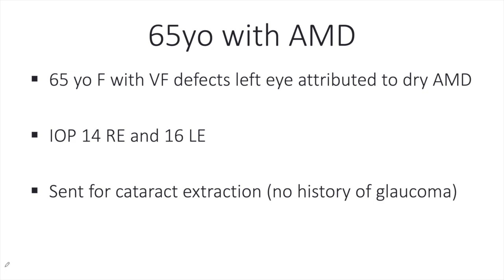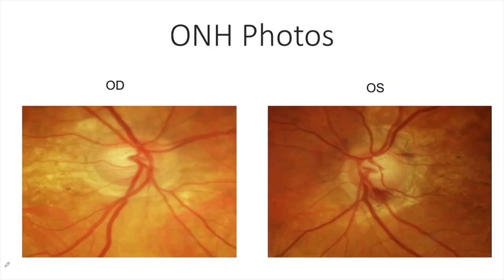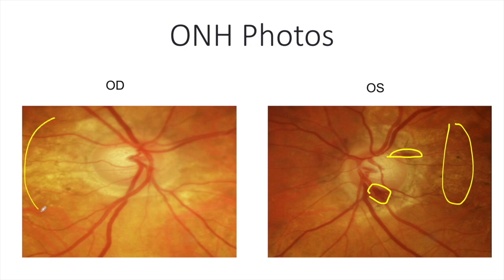The next patient is a 65-year-old with history of visual field defects on the left side attributed to dry AMD, sent over for cataract extraction with no history of glaucoma. Pressure is 14 on the right and 16 on the left. The optic nerve head on the right shows thinning of the neuroretinal rim with slight tilting, peripapillary atrophy, and signs of dry AMD. On the left, we see a disc hemorrhage along with thinning of the neuroretinal rim, slight tilting, and peripapillary atrophy, along with drusen and some RPE atrophy.